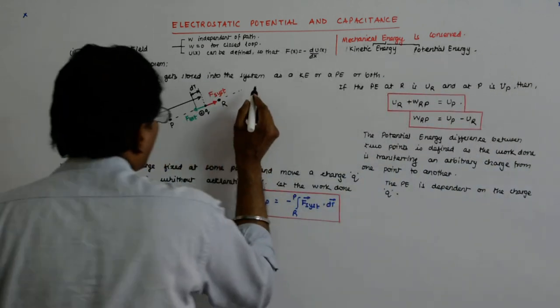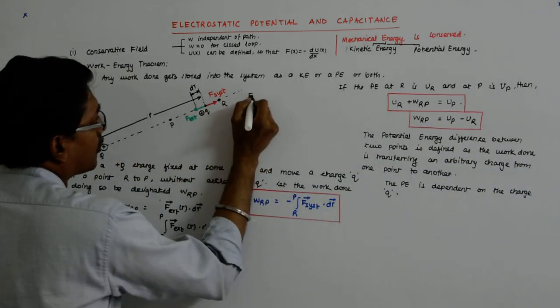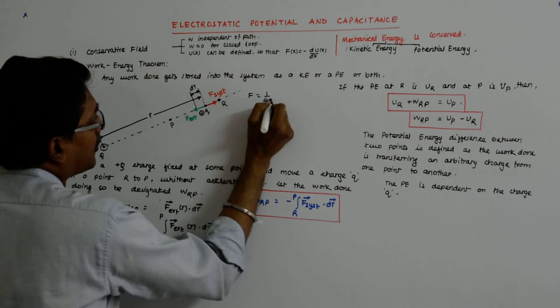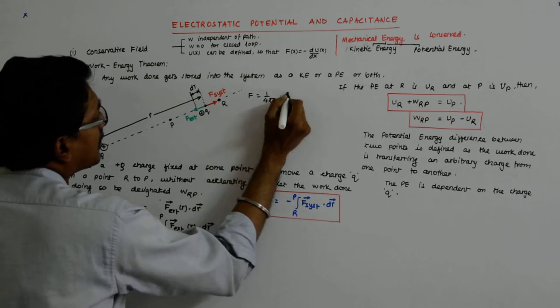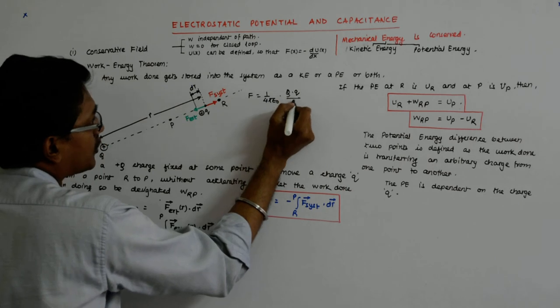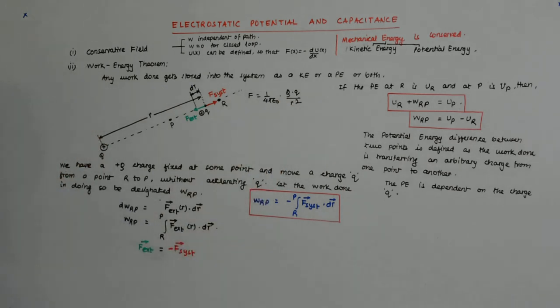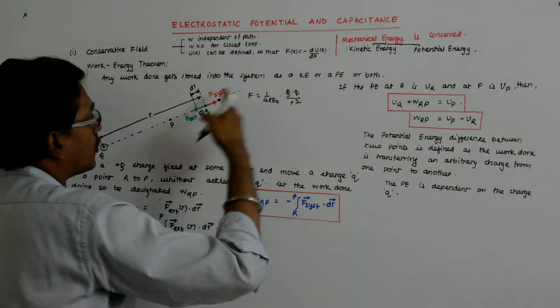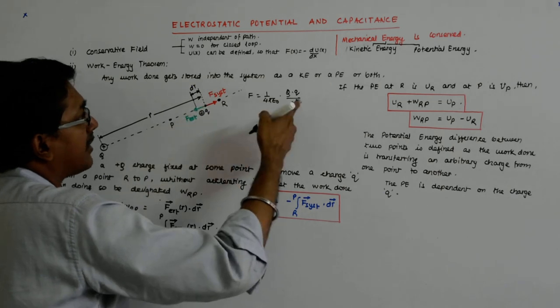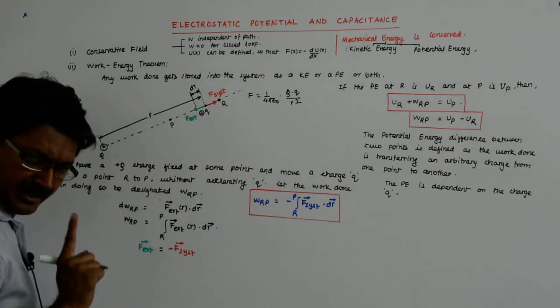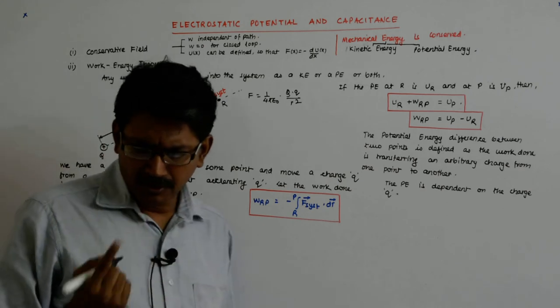Because force is nothing but 1/(4πε₀) × Q × q / R², right? So someone who gets in Q, if he feels a force F here, then someone with 2Q at the same point will feel a force double of that.